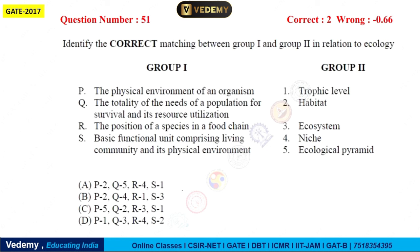You have to find the correct match. First: the physical environment of an organism — we call it Habitat. So Habitat is mentioned in our second position. Next: the totality of needs of a population for survival and its resource utilization. Next is position of species in the food chain. Looking at the options, the first option here will match it.